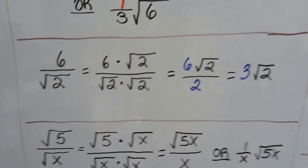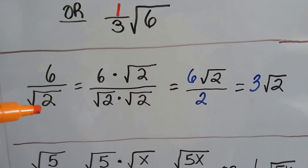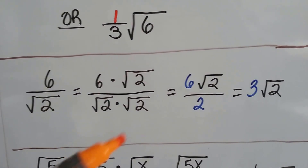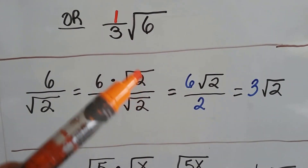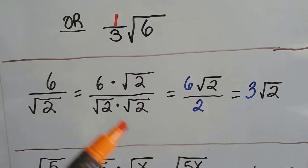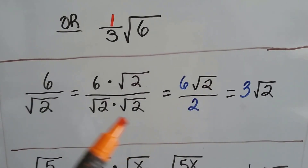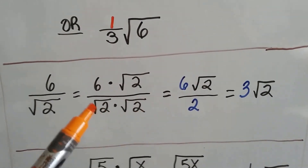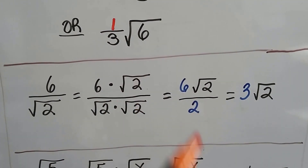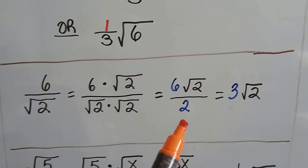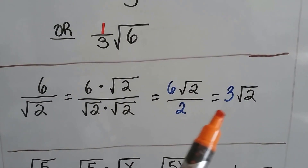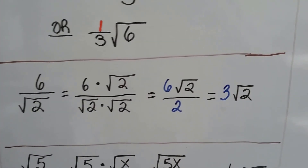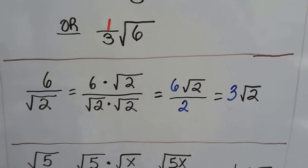Take a look at this one. What we do is multiply by the denominator as a 1, so we put the square root of 2 over the square root of 2 and multiply them. We get 6 times the square root of 2 over 2, because the square root of 2 times the square root of 2 is the square root of 4, and the square root of 4 is 2. So 6 divided by 2 is 3, giving us 3 times the square root of 2 as our answer — and that's not a perfect square, so it stays inside the radical sign.